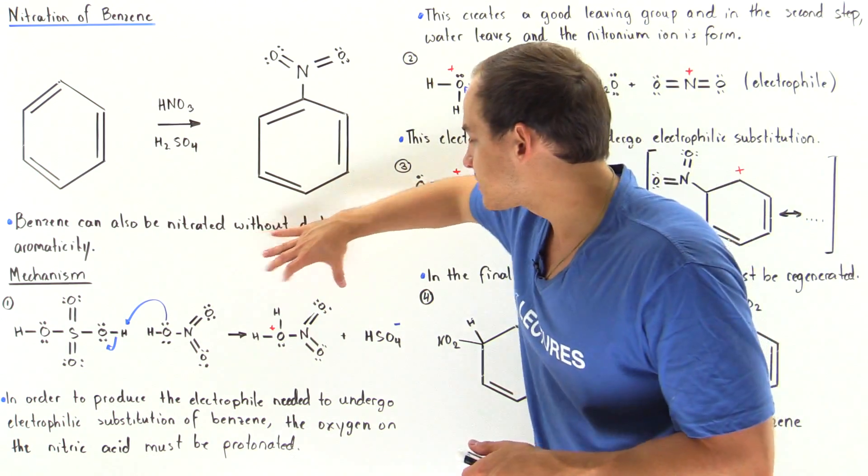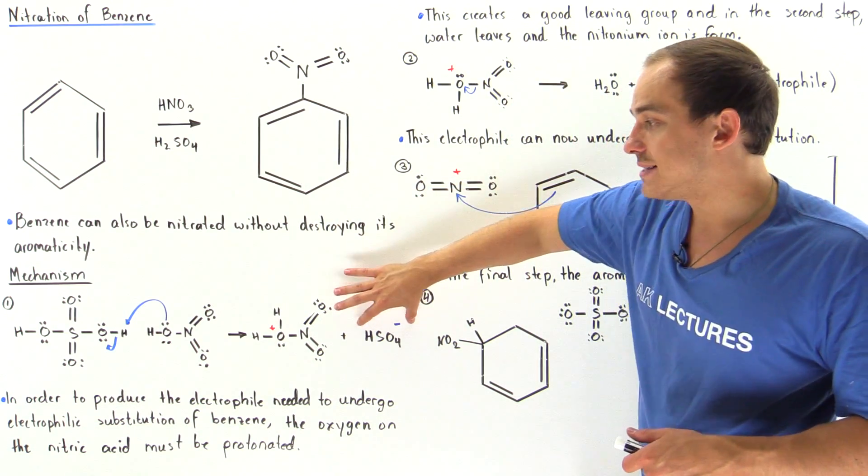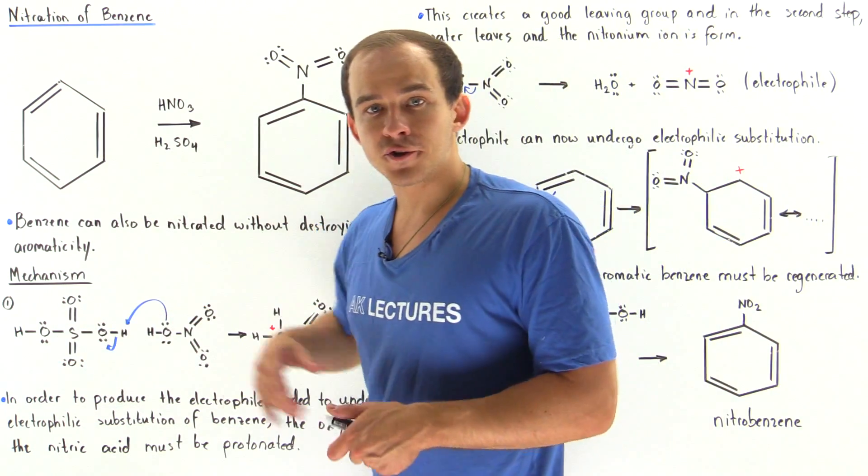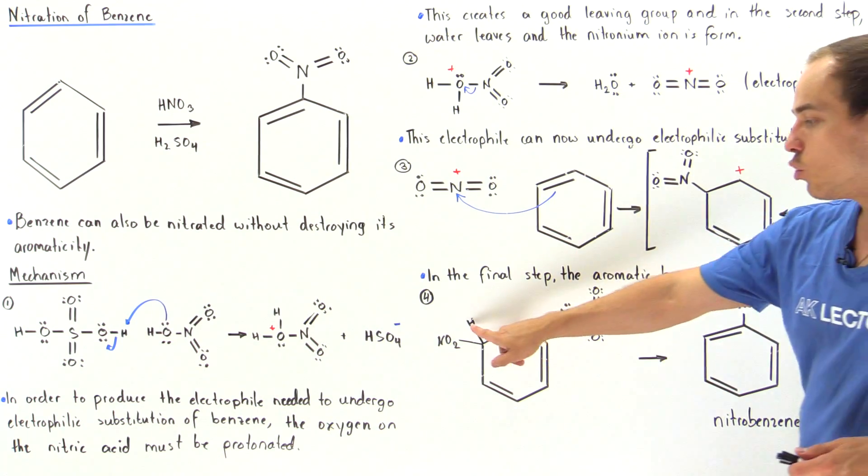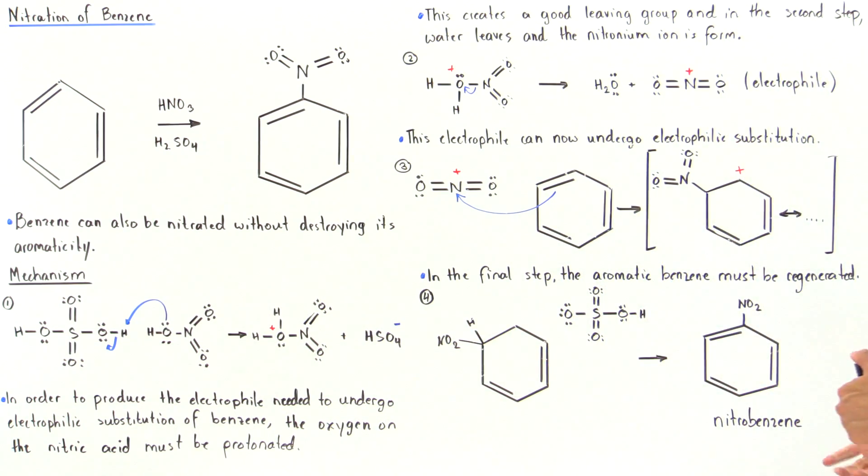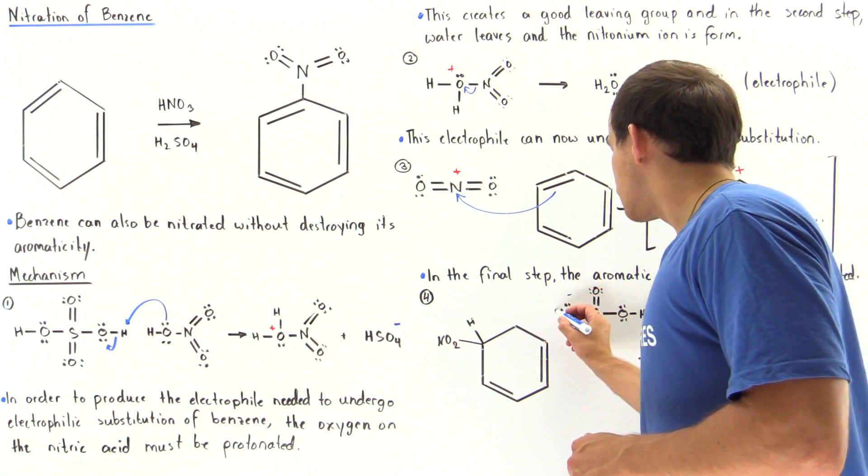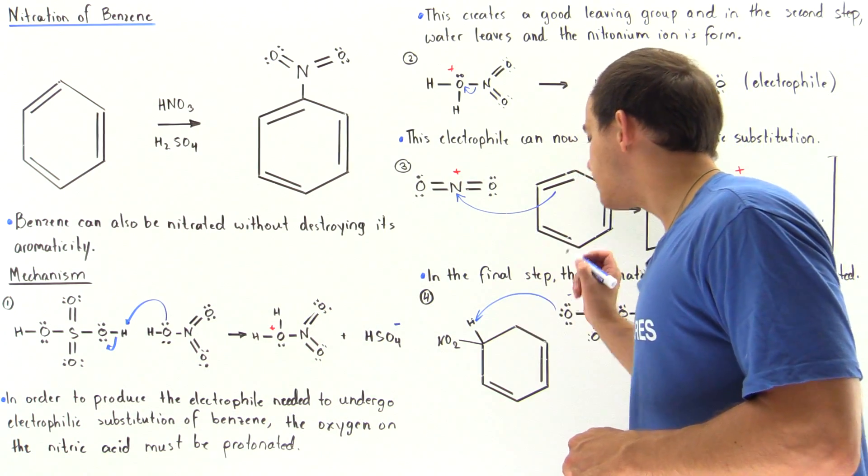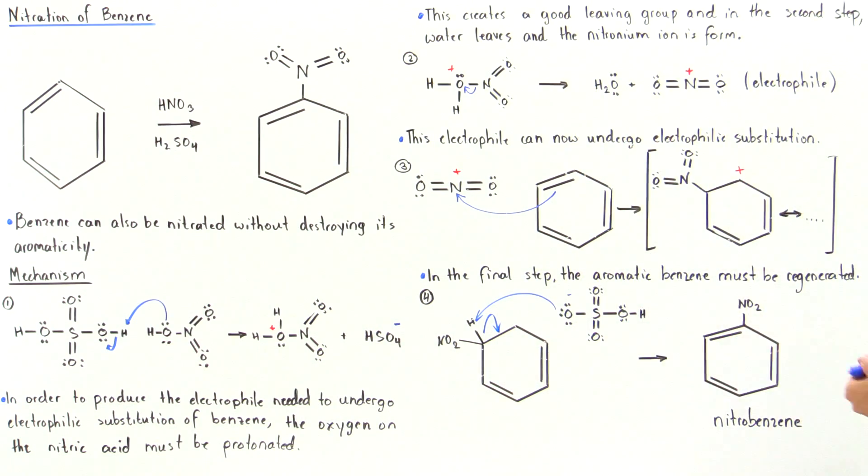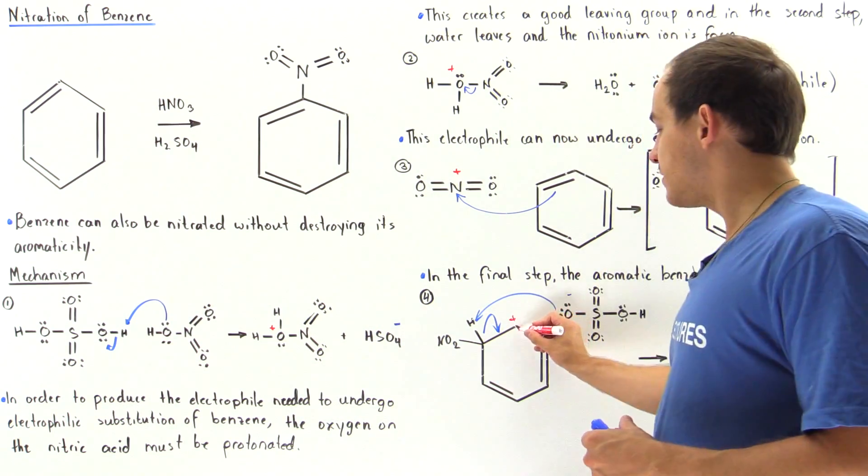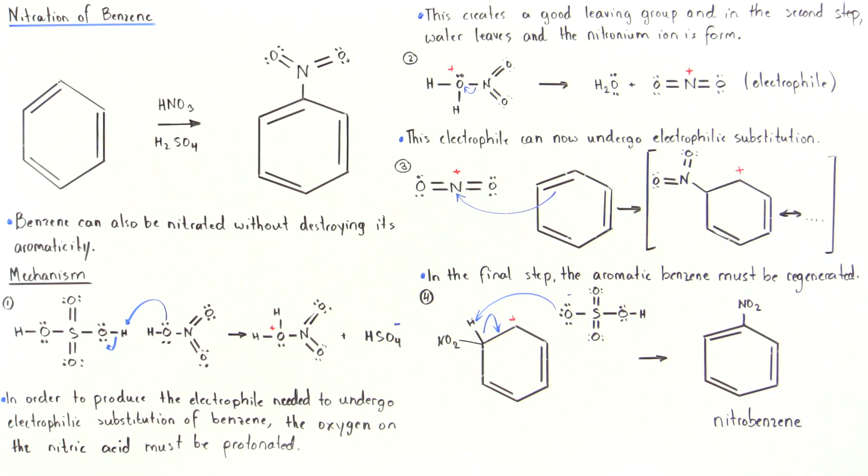The conjugate base that was produced in the first reaction, our Lewis base, reacts with this H atom, taking that H atom away in the following fashion. This grabs our H and regenerates our pi bond because we have a positive sign, an empty orbital, on that particular carbon.